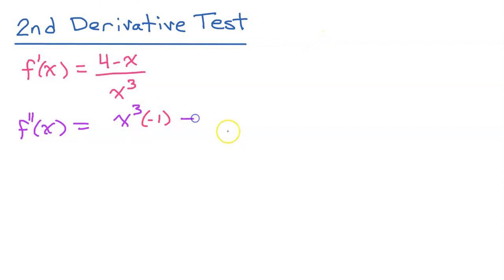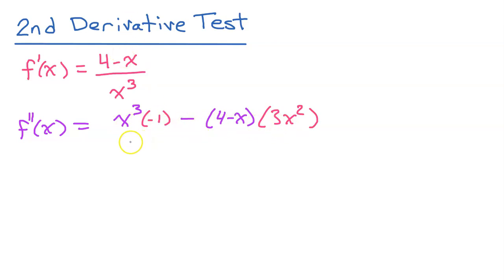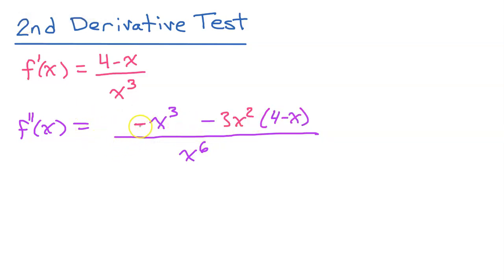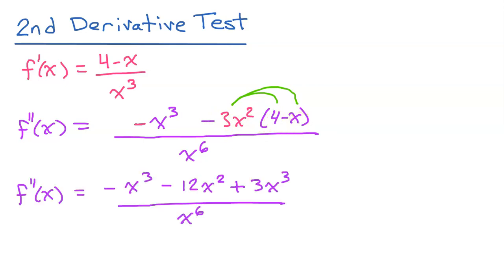Less high d low: subtract the numerator four minus x, times the derivative of the denominator, which is three x squared. Draw the line and down below, the bottom squared goes, which is x to the sixth power. Simplifying: I put the negative sign on the first term and move three x squared to the front. Then I distribute negative three x squared across four minus x.